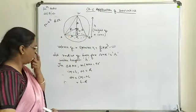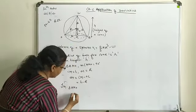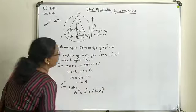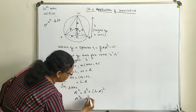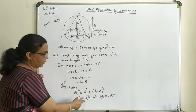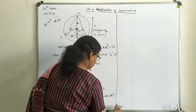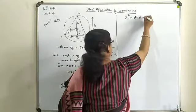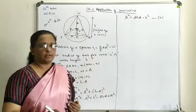In triangle AMO, applying Pythagoras: R² = r² + (h − R)². Expanding: R² = r² + h² − 2hR + R². The R² terms cancel, giving us r² = 2hR − h². This is one important relation expressing r² in terms of h.